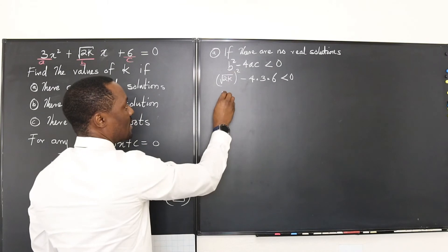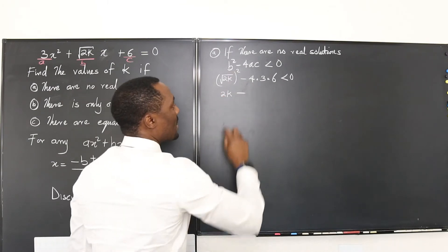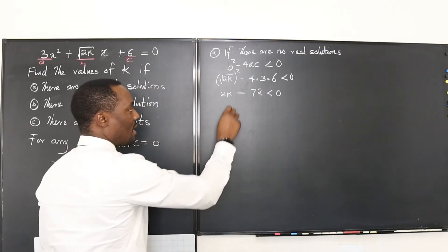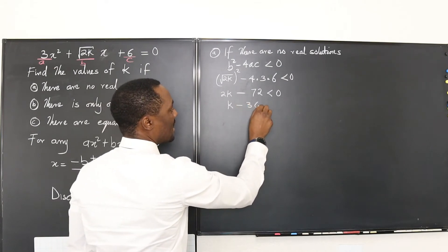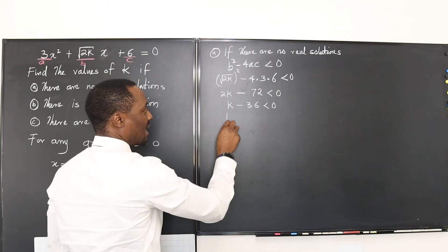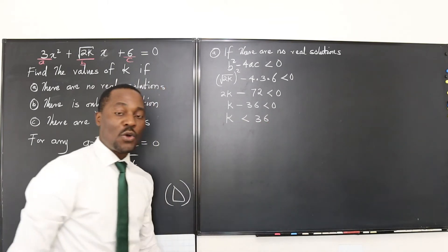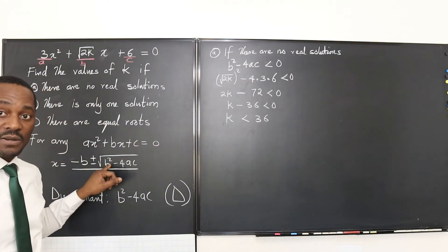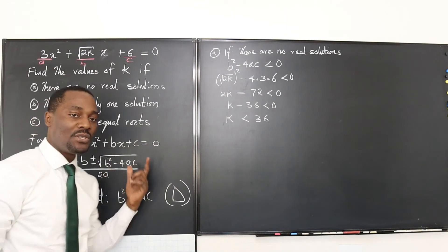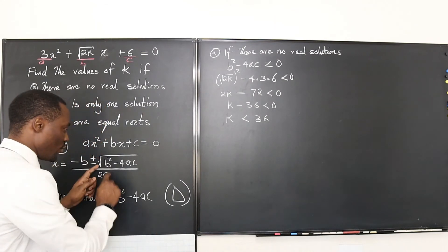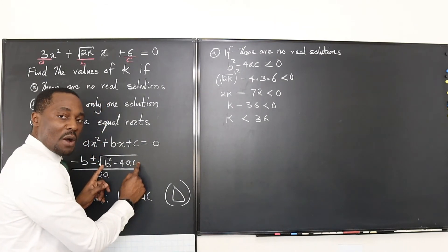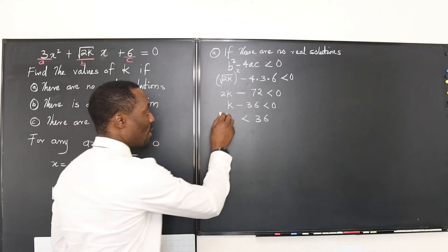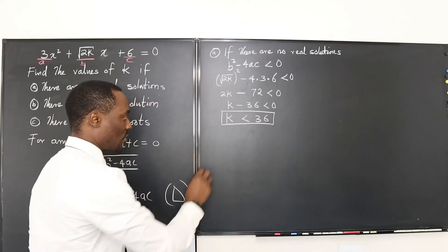It's less than zero. So that tells us that if you square this, you're going to get 2k minus, this is 12 times, that's 72, is less than zero. I can divide through by two and I get k minus 36 is less than zero. So if I isolate k, k is strictly less than 36. So any number that is less than 36 will give you a negative discriminant. And once that happens, you're not going to get a real solution because you'll be taking the square root of a negative number which will be giving you imaginary parts. So that's the solution to that. It's when k is less than 36.